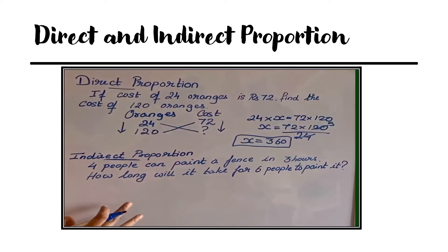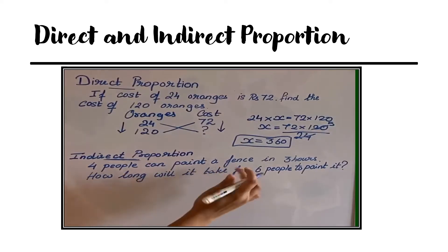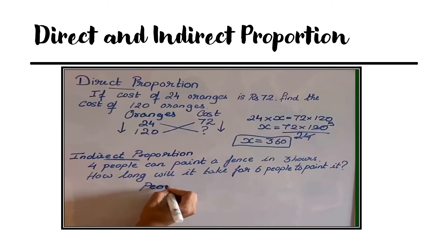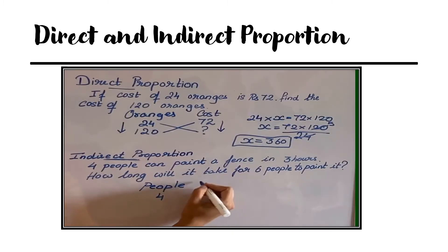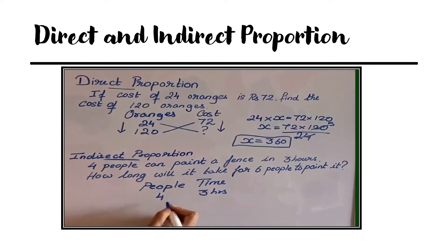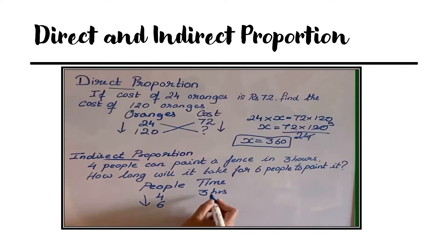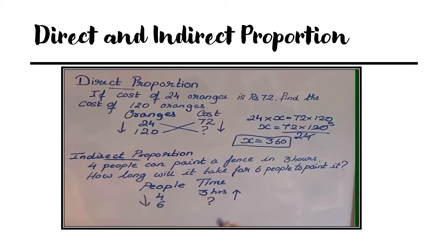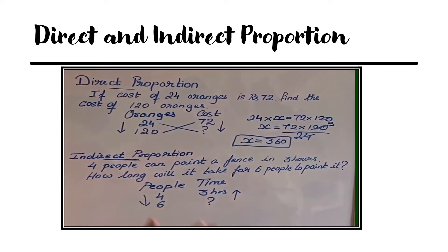Let's see an example. If four people can paint a fence in three hours, then how long will it take for six people to paint it? When the number of people is four, the time taken to finish the work is three hours. When the number of people increased from four to six, the time taken to complete the work will decrease. So if one increases, the other decreases — this is indirect proportion.